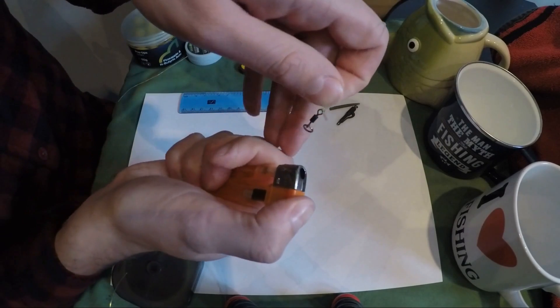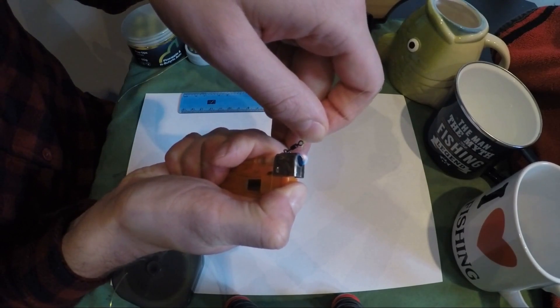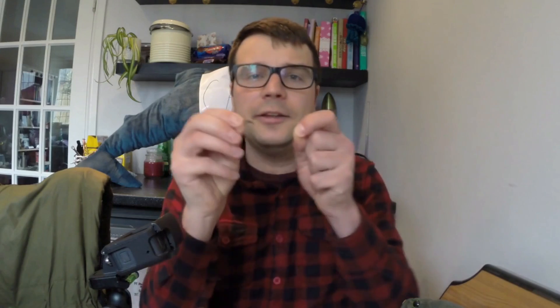I just blob it with a lighter. So that is effectively the little chod rig, the hook section tied. I'll put the hook on later because we're going to do the boom section next.